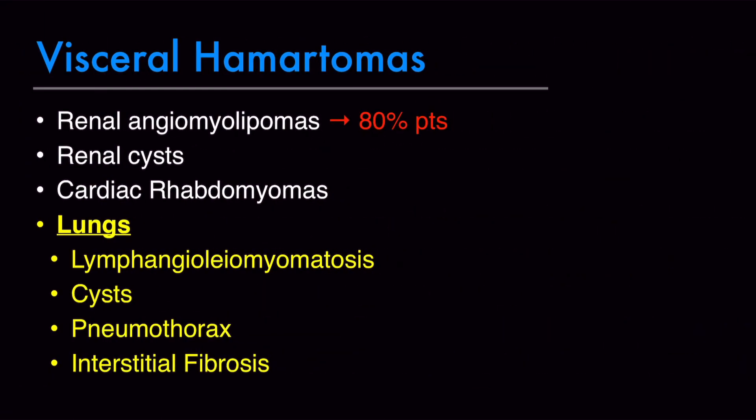The visceral lesions in tuberous sclerosis are also all hamartomas. There are renal angiomyolipomas — the commonest lesion, present in about 80% of patients — renal cysts, and cardiac rhabdomyomas. In the lungs, you can have lymphangioleiomyomatosis, cysts, pneumothorax, and interstitial fibrosis. Most of these lesions are diagnosed radiologically, so radiological investigation is very important. In a clinical quiz, when you see one of the cutaneous features of tuberous sclerosis combined with radiological images, that is your hint.